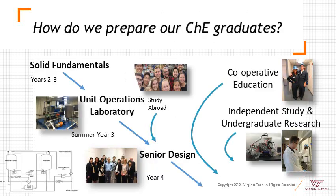How do we prepare our chemical engineering graduates in the Department of Chemical Engineering at Virginia Tech? We start out with solid fundamentals, which requires about two to three years of study. We then move students in the summer of the third year into unit operations laboratory, where they have a chance for study abroad as part of that experience if they so choose. Then in the senior year, they have a capstone project called senior design. We also offer cooperative education experiences, independent study, and undergraduate research — a hands-on, minds-on approach of experiential learning and practice.